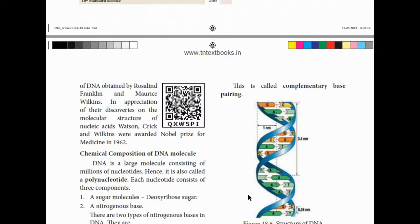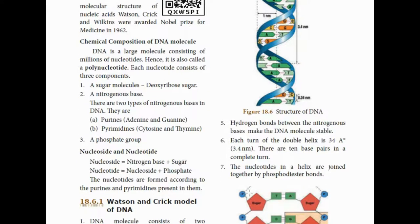This is the chemical composition of DNA. DNA is made up of millions of nucleotides — so DNA is a polynucleotide. Each nucleotide has three components: one sugar molecule, which is deoxyribose sugar; one nitrogenous base — there are two types: purines, which include adenine and guanine, and pyrimidines, which include cytosine and thymine; and third, the phosphate group.